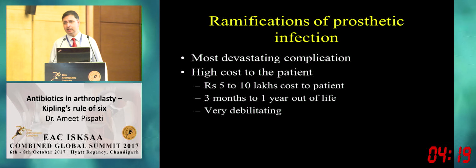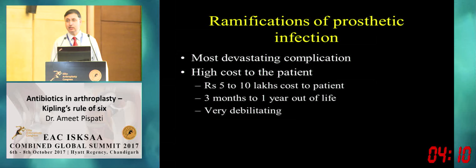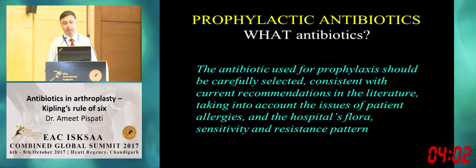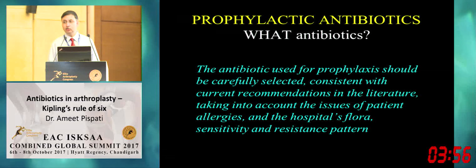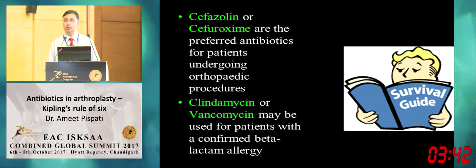Prosthetic infection is the most devastating complication. Costs involved are very high — on average five to ten lakh rupees in private practice. It can take three months to a year or more out of a patient's life. The antibiotic used for prophylaxis should be carefully selected, consistent with current recommendations, taking into account allergies and the hospital's flora, sensitivity, and resistance pattern. It should be specific to your hospital setting — not just what a journal recommends.